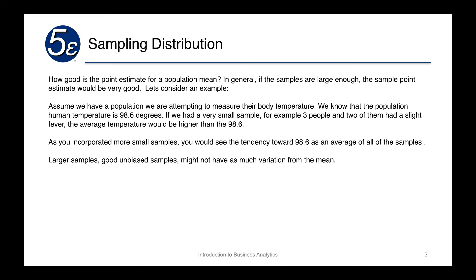But as we incorporated more and more samples, or more and more observations, we would see the tendency towards 98.6 as an average of all the samples. So consider we had the samples of three, and three, and another three, and another three. As you added more samples, you would get towards 98.6.